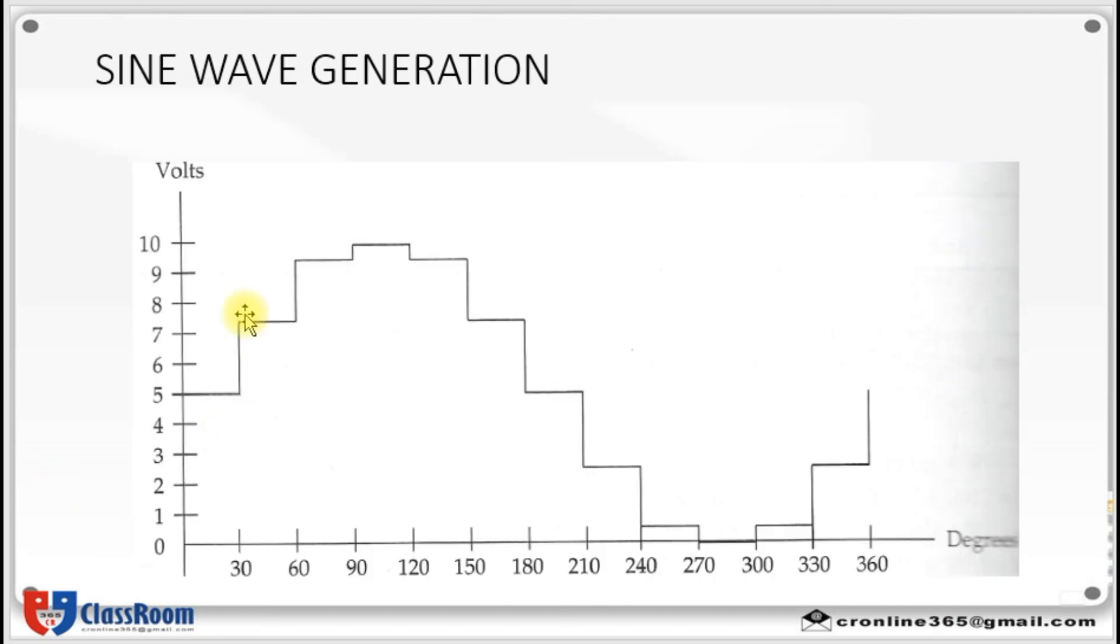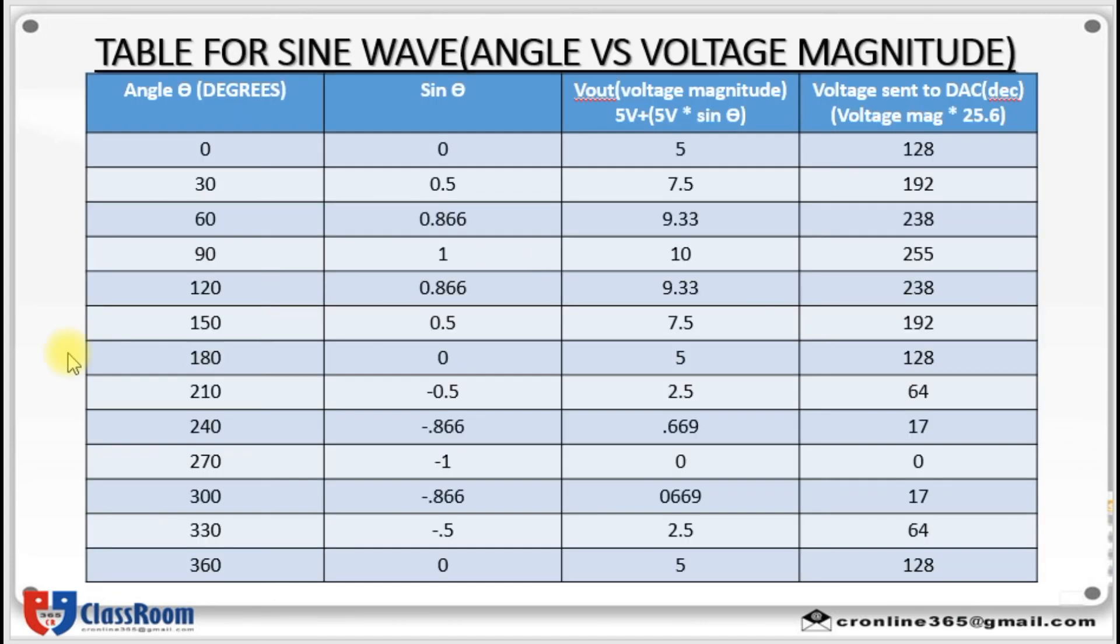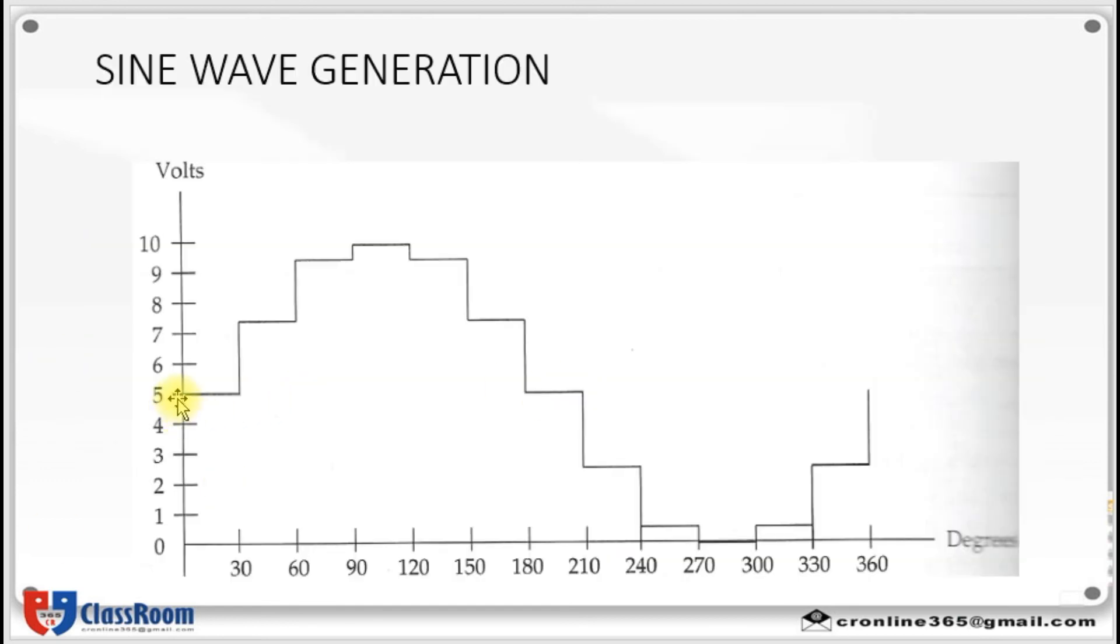Through this program you can generate a sine wave like this. Here you can see a sine wave. Here you can see these values 5, 7.5, 9.33, 10 and so on. Then here you have created degrees and mentioned volts. Y axis represents volts and x axis represents degrees. So for 0 degree we have got 5 and for 30 degree we got 7.5. So this table you have to draw and you can generate a sine wave like this.